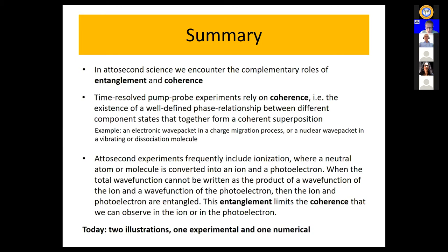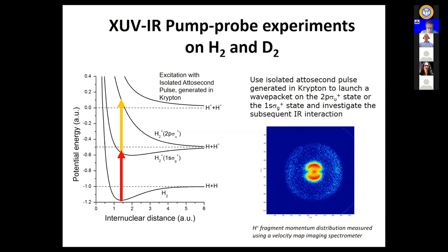I will illustrate this point in two ways. First, I'll briefly discuss an experiment we did some years ago — the first attosecond pump-probe experiment on a molecular system, performed in the laboratory of Mauro Nisoli in Milano. It was a classic XUV plus IR pump-probe experiment where we used an attosecond pulse to ionize the hydrogen molecule, producing H2+ in the two lowest electronic states: the bound 1s sigma g state or the repulsive 2p sigma u state.